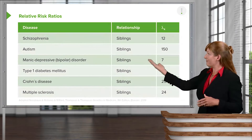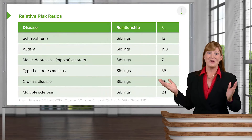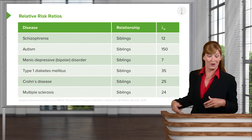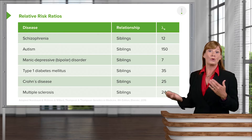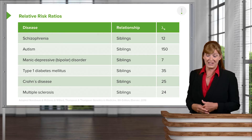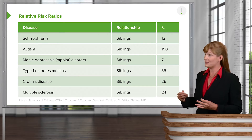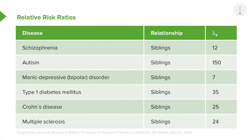Here's a chart of a number of different lambda values. You don't need to remember what the specific lambdas or relative risk ratios are, or which ones have particularly high risk ratios. However, it's quite interesting to look at these lambda values, as people in genetic counseling certainly do. All of these are conditions said to have a genetic component, and we'll dig into a couple in more detail in a future lecture.